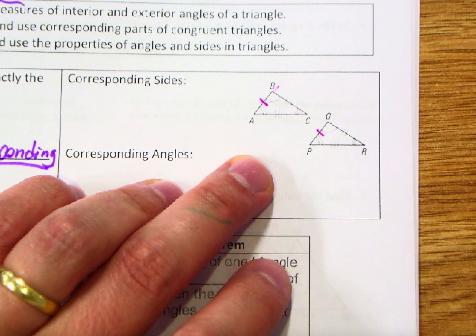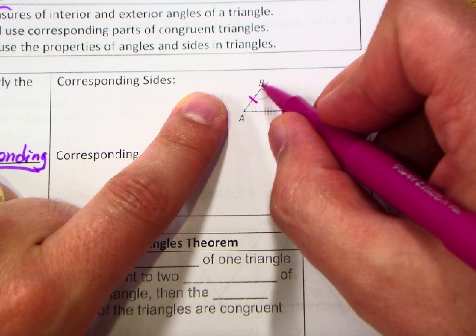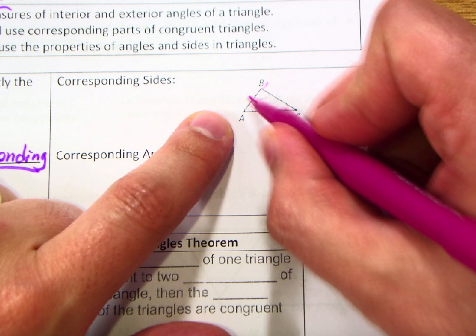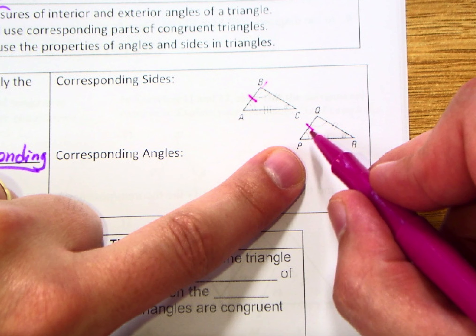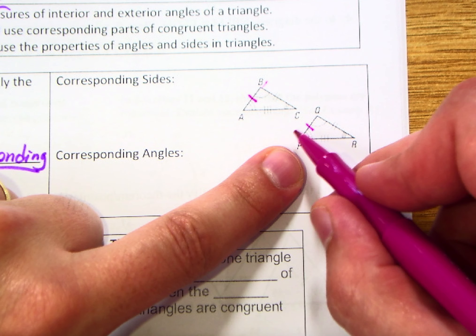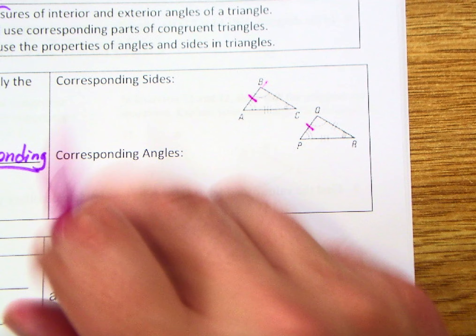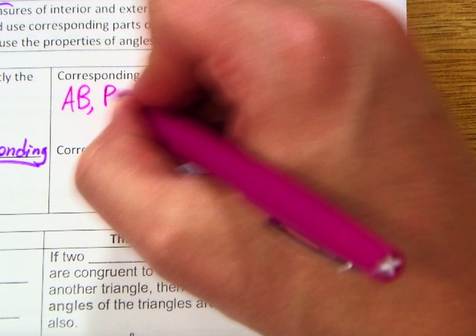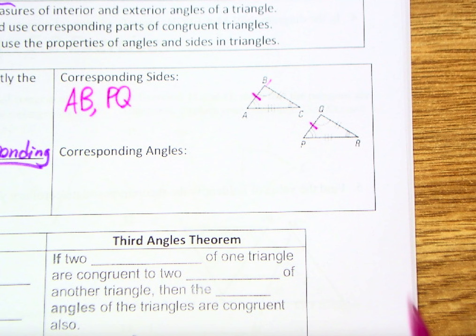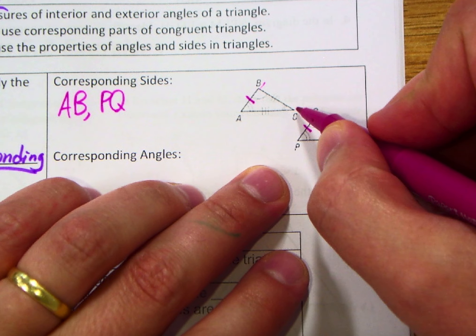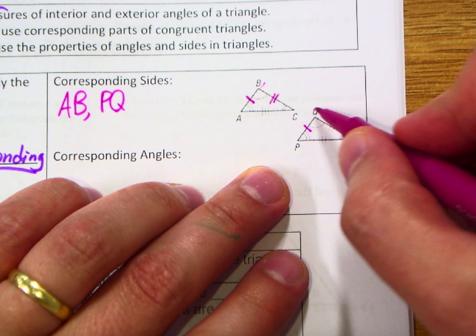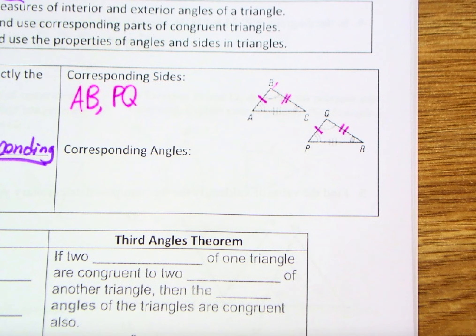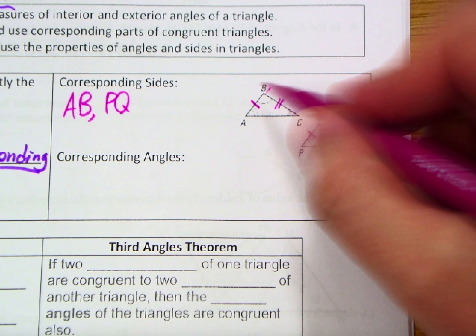Let's check what they're between. Segment AB is between B, which has a single arc, and A, which has a double arc. The same is true of PQ — PQ is between Q, which has a single arc, and P, which has a double arc. So now I can say they're corresponding sides: AB and PQ. BC has a double notch, QR also has a double notch, and each is between a single arc and a triple arc, so yes, they're corresponding: BC and QR.